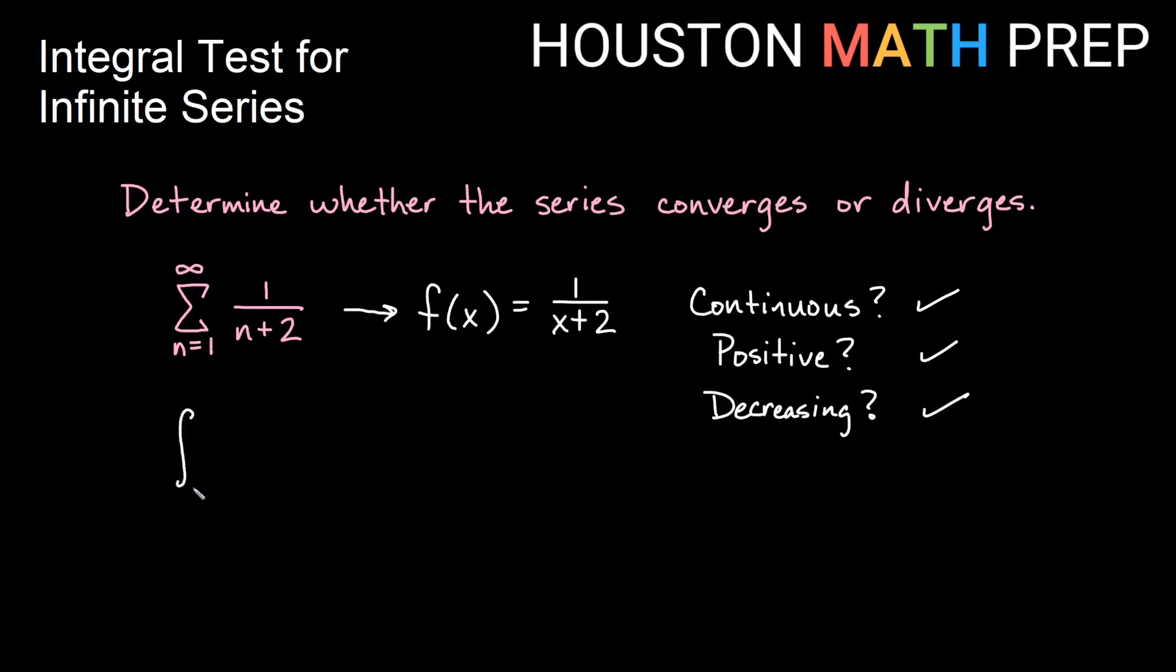So we set up an integral from 1 to infinity, my same bounds here, of 1 over x plus 2 dx. And I say that whatever this does, big picture, converges or diverges, my original series will also do that. But one thing we said about our integral here, 1 to infinity, is that it's going to be improper. So we might replace our infinite bound with something like a dummy variable b and say, what is the limit as b approaches infinity of 1 to b of our 1 over x plus 2 dx? Remember that infinity is not a number we can just plug in and do arithmetic with. We need to think about approaching infinity.